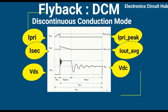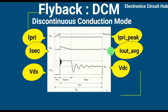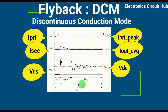What is DCM? We'll look at how primary current I-primary ramps up from zero and then collapses down, what is the primary peak current, what is the secondary current and how it collapses to zero, what is the average output current, what is the drain-to-source voltage, the switching period, on time, demagnetizing time, dead time, and off time.